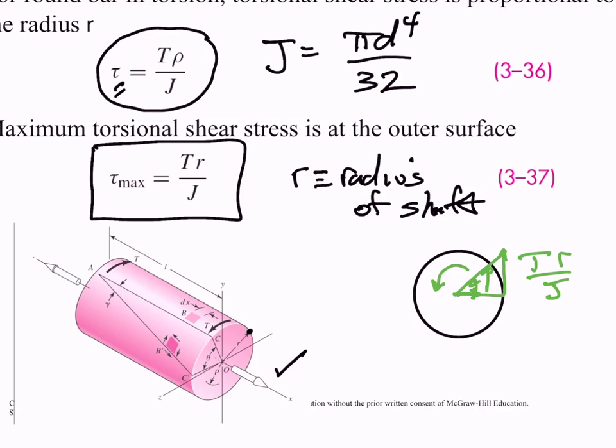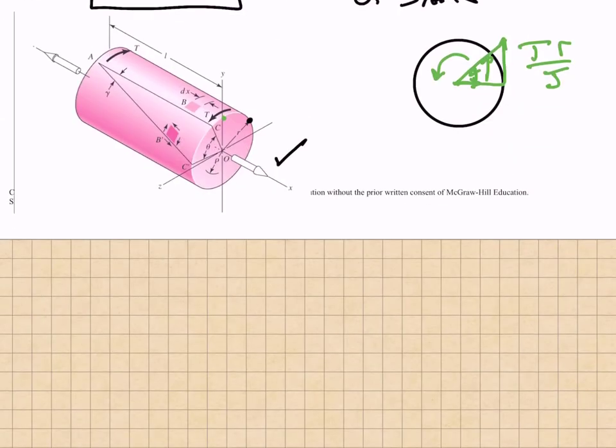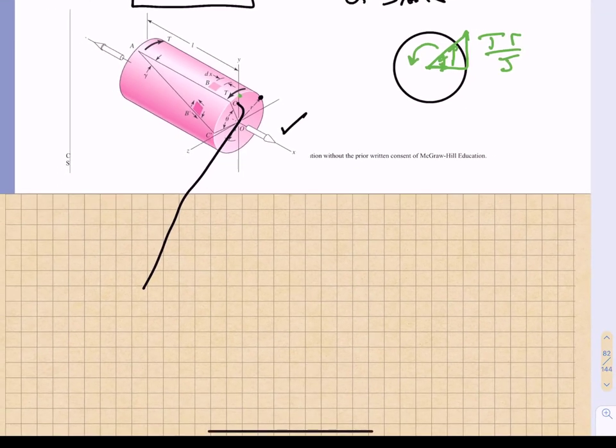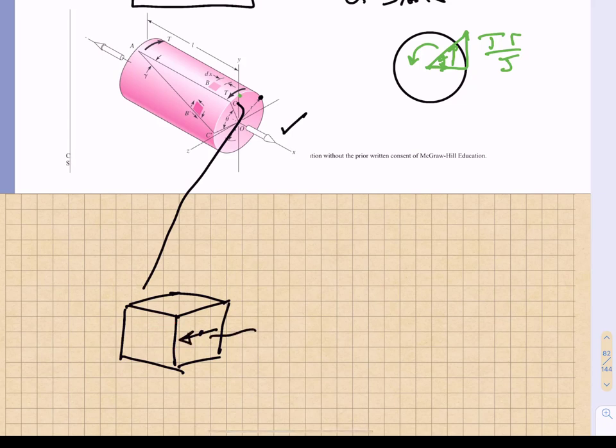If we were to take a small materials element out of this bar, let's imagine a materials element taken directly from the top of this bar. This is the face upon which we have the exposed torque. So given the right-hand rule for this particular shaft, we would be shearing in this direction. That would be our Tr over J term.